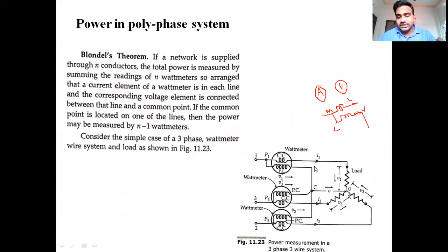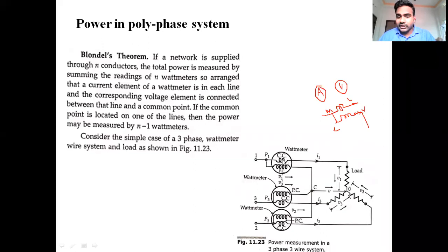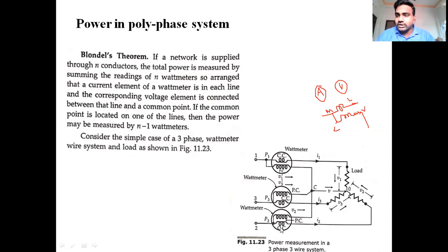Here we have three conductors. Each conductor has a current element — meaning a current coil winding. Current coil winding is connected to conductor 1, conductor 2, and conductor 3. This type of current coil winding is called the current element. A certain amount of current flows through each conductor via the current element.